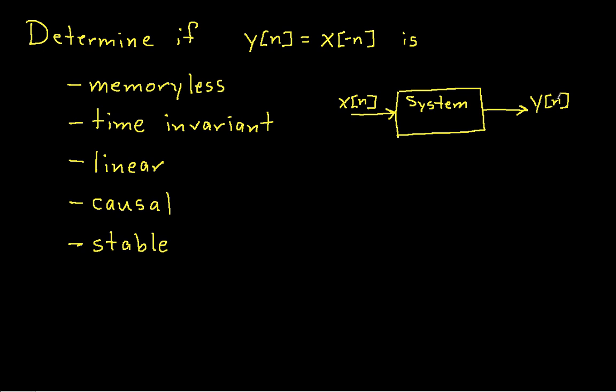If n is less than 0, so y of negative 2, the system looks forward into the future to see x of 2 and outputs that as y of negative 2.